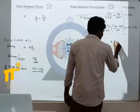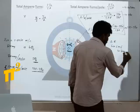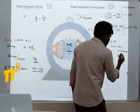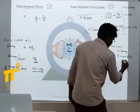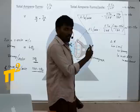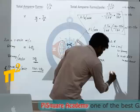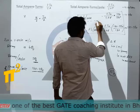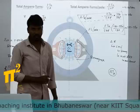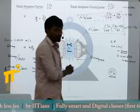To conclude: armature reaction leads to a cross-magnetizing effect; due to this cross-magnetizing effect and saturation, there is a small demagnetization; this cross-magnetizing leads to MNA shift; MNA shift leads to poor commutation or sparking at the brush. To avoid sparking, we shift the brush in the same direction as MNA shift. If the brush is shifted, there is a demagnetizing effect from those conductors, and the remainder still has a cross-magnetizing effect.